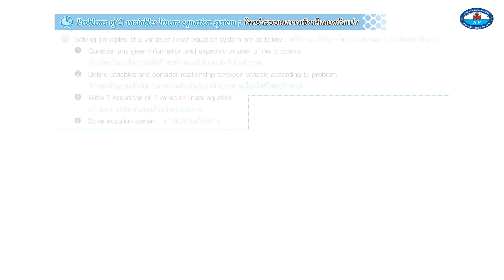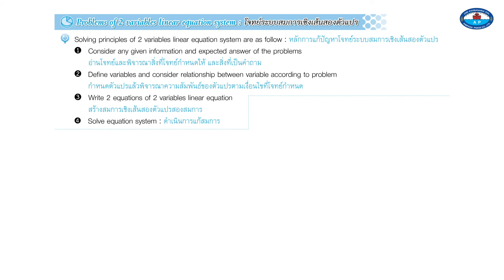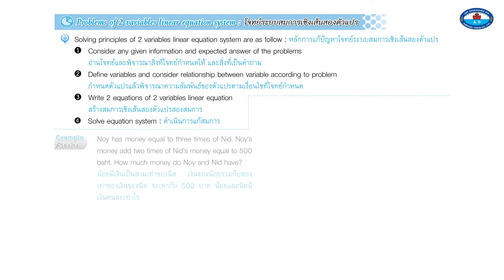Word problems involving two-variable linear equation systems follow these principles: 1. Consider the given information and expected answer. 2. Define variables and consider relationships between them. 3. Write two equations with two variables. 4. Solve the equation system. Example: Noi has money equal to 3 times Nid's. Noi's money plus 2 times Nid's money equals 500 baht. How much money do Noi and Nid each have?